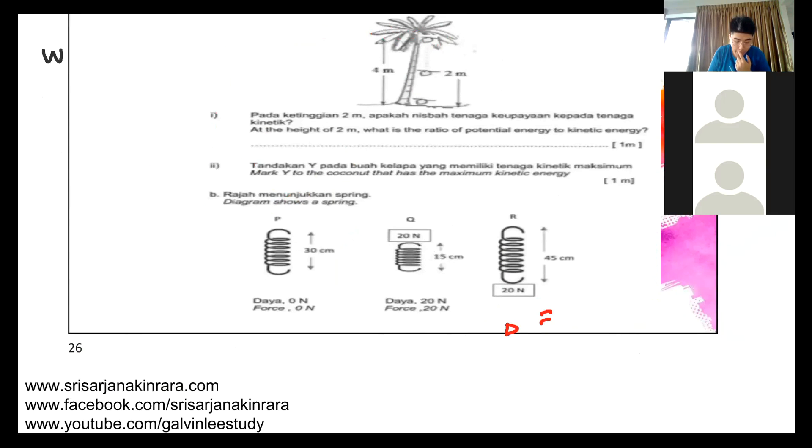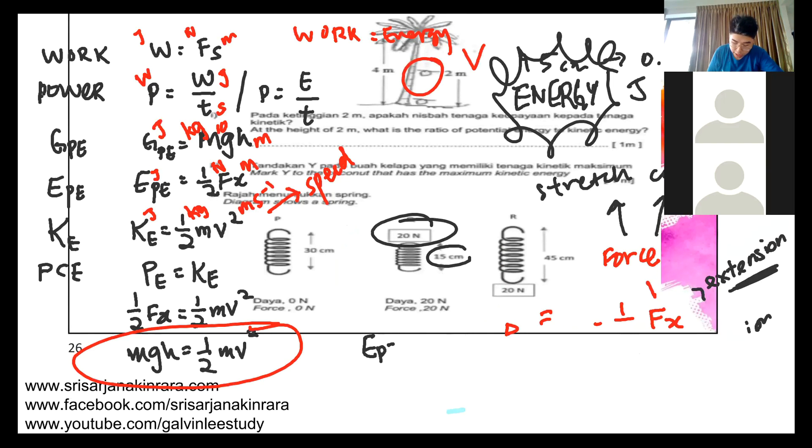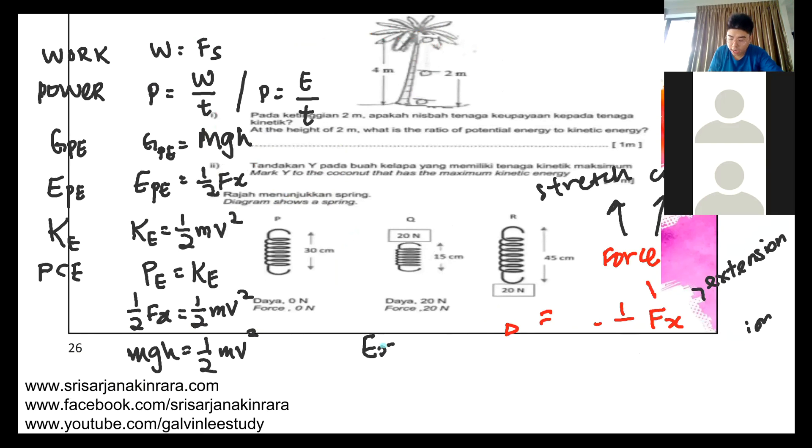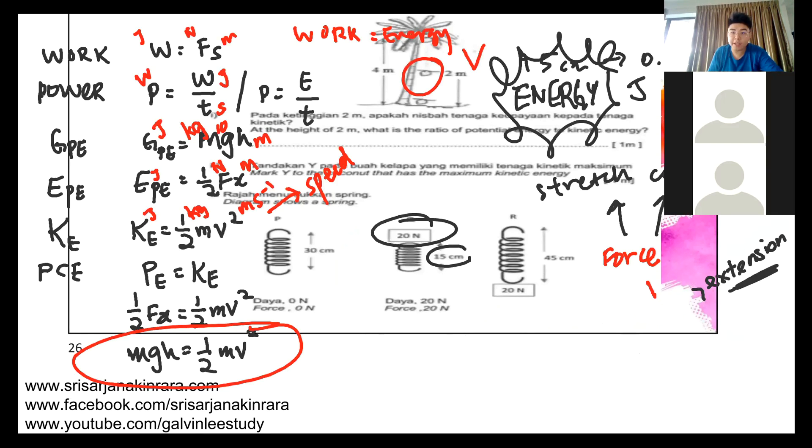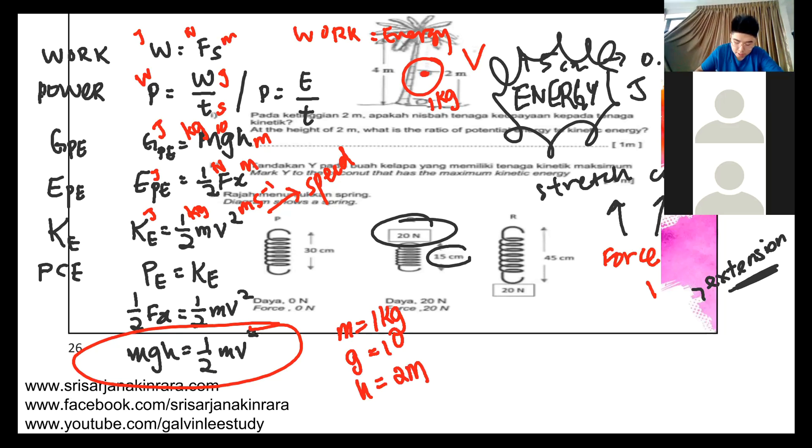Let me show you how do I find the velocity or the speed of the coconut since I do not have enough information. Coconut is 1 kg, what is the velocity of the coconut when it's in the middle here? You know that m is 1 kg, you know that g is always 10, you know that the h in the middle is 2 meters. And you know that the kinetic energy, half mv squared, you know that m is 1 kg. The only thing you need to find is v.